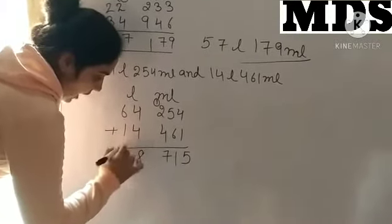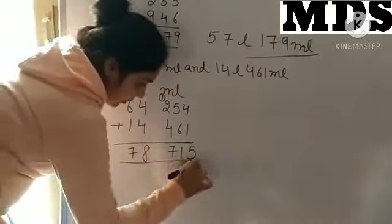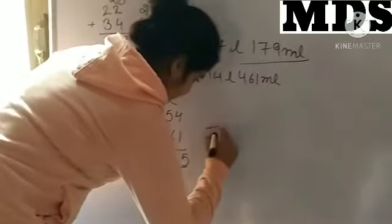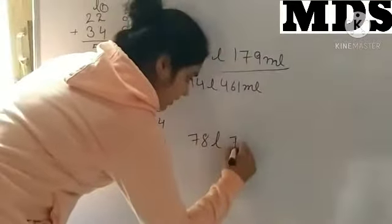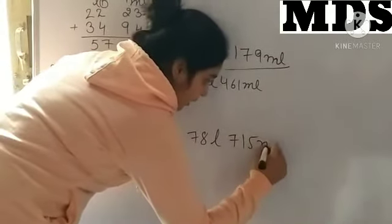4 plus 2 is 6 and 1 is 7. 4 plus 4 is 8 and 6 plus 1 is 7. So, answer is 78 liters, 715 milliliters.